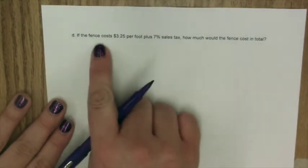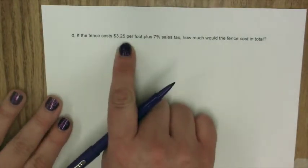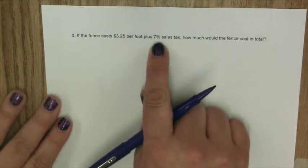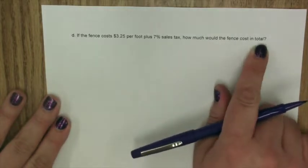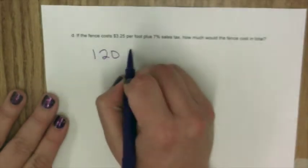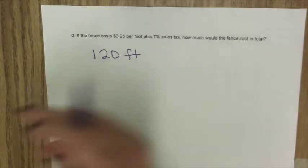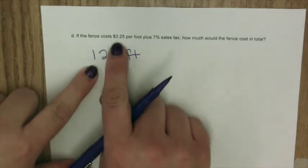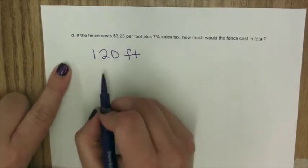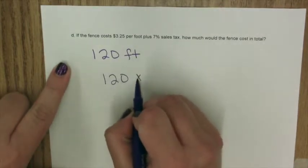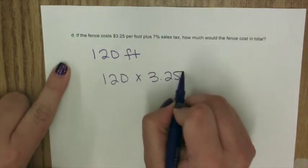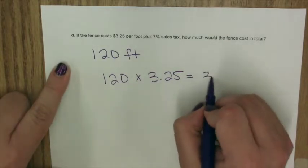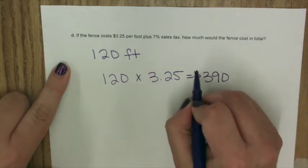Question D. If the fence cost $3.25 per foot plus 7% sales tax, how much would the fence cost in total? So from our previous question, we know that we need 120 feet total length of fence. Now we're going to take that and times it by this unit rate of $3.25. When we multiply, we get that equals $390.